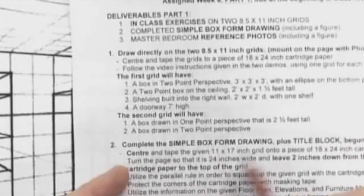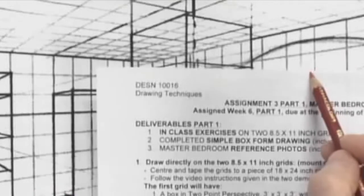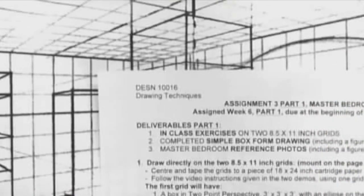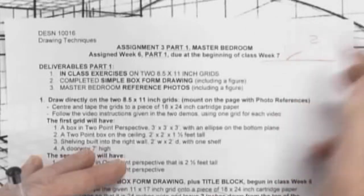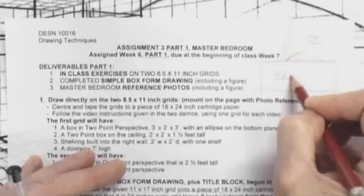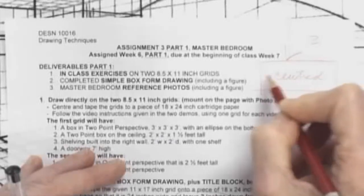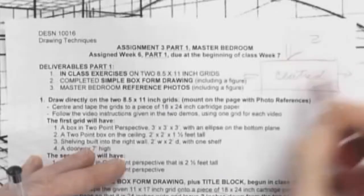It's very important when you set your drawing up, when you set your grid up, turn your 18 by 24 paper so that 24 inches is the width. Leave two inches down from the top of the cartridge paper to the top of your grid. You can center your grid because both of our vanishing points are visible on the grid. But you need to leave two inches down from the top of the page. Don't start your grid, don't tape it on until two inches below.